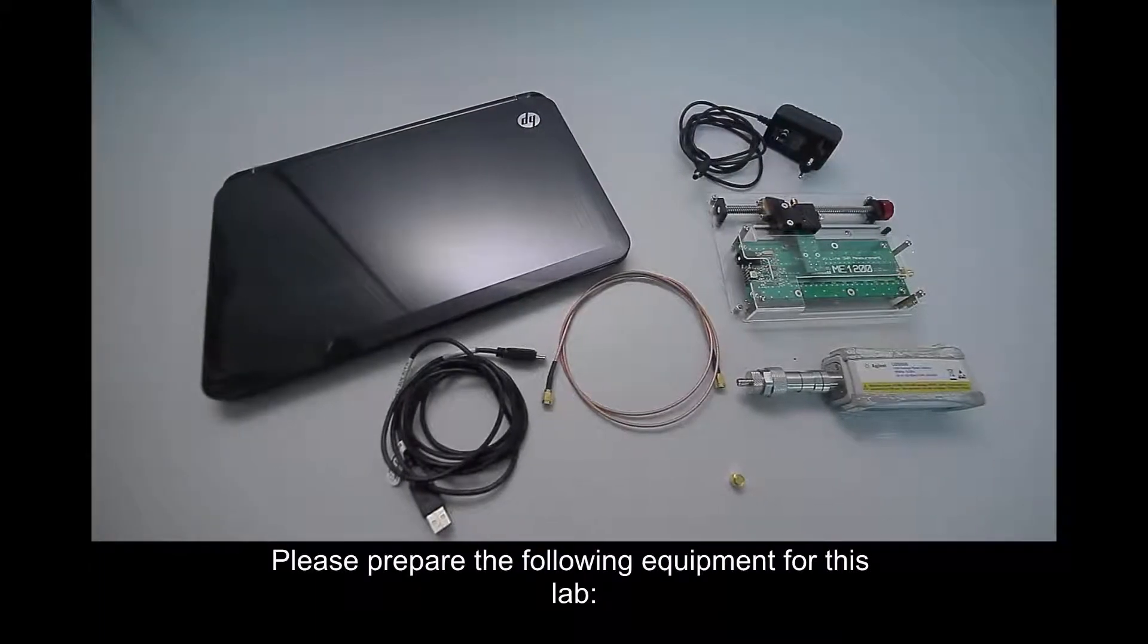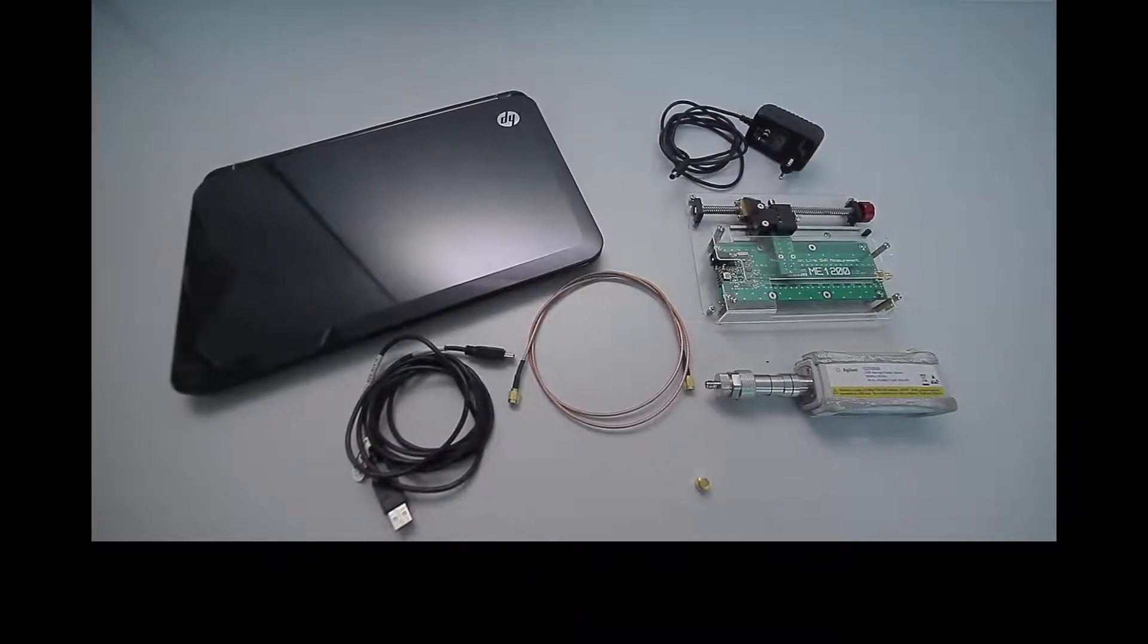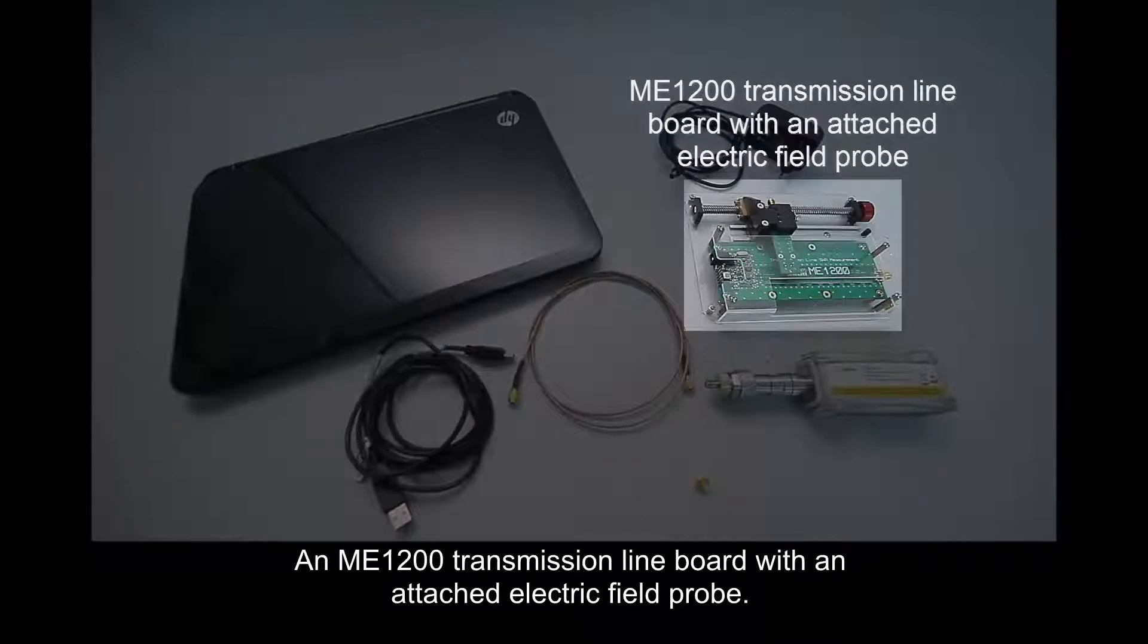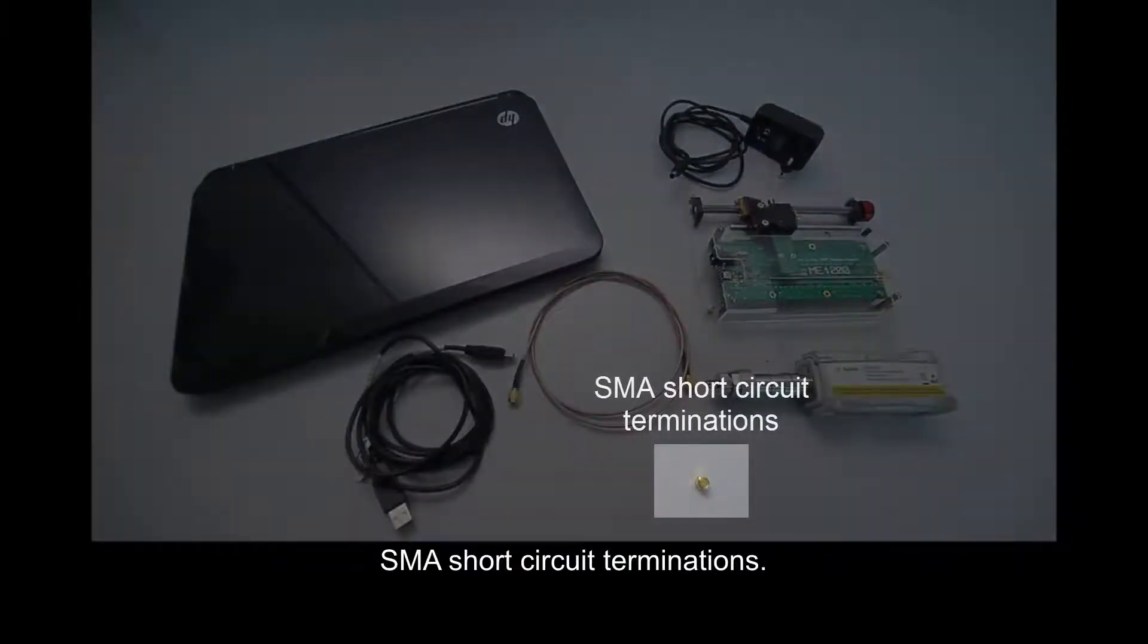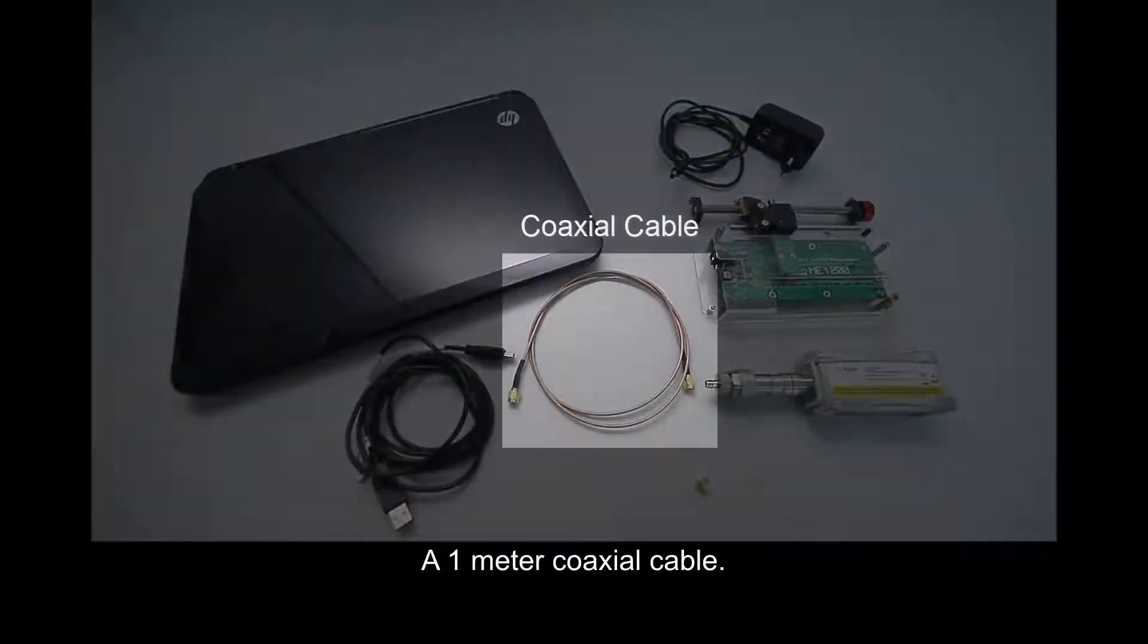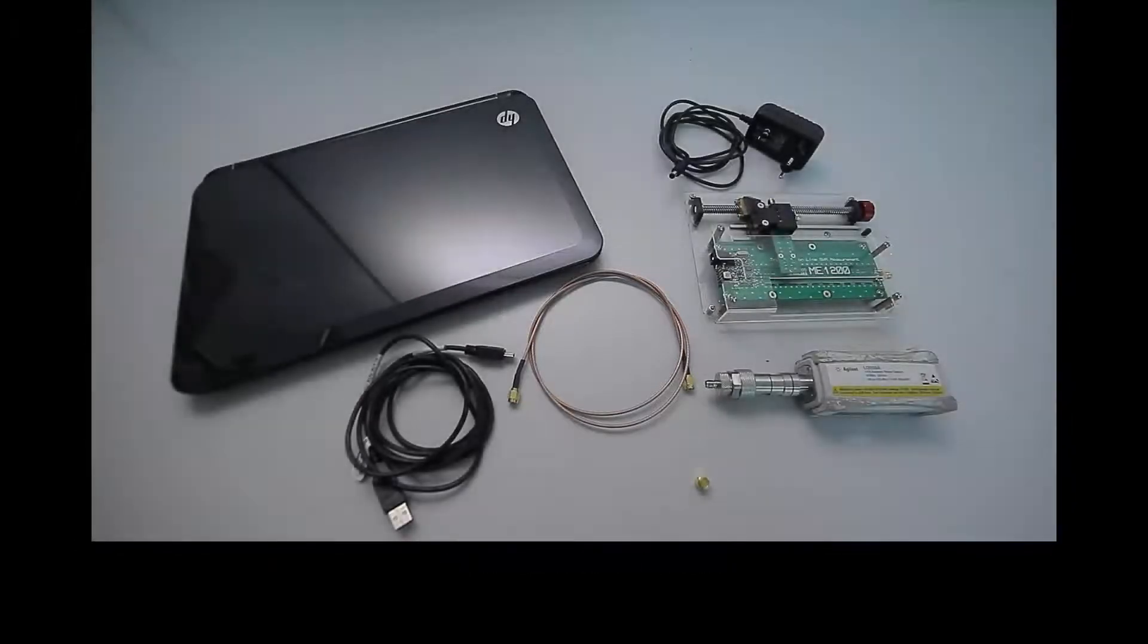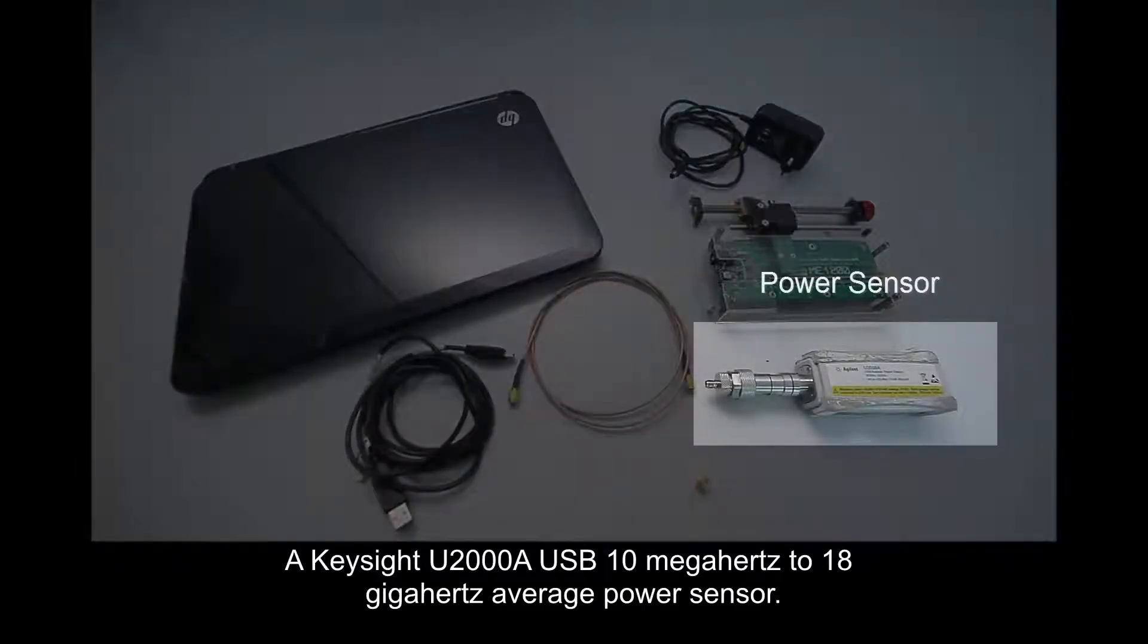Please prepare the following equipment for this lab: an ME1200 transmission line board with an attached electric field probe, SMR short circuit terminations, a 1 meter coaxial cable, a Keysight U2000A USB 10 MHz to 18 GHz average power sensor.